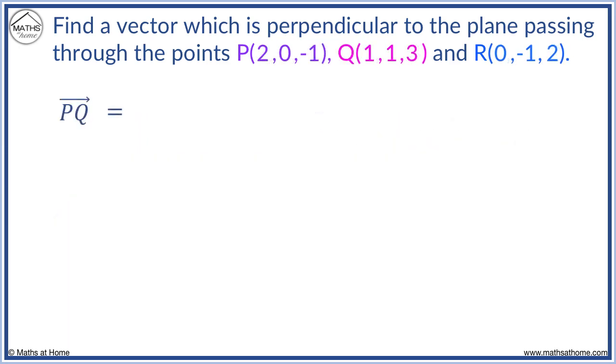First, we find PQ by subtracting P from Q. PQ is the same as 3 plus 1, which equals 4.